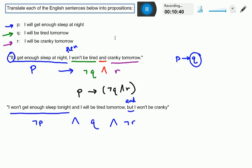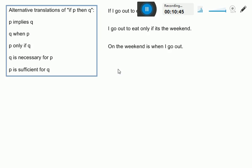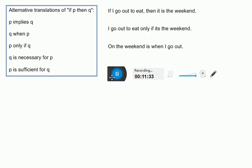One last note, just to keep in mind, it probably won't be a big issue this semester. But in the future, there are actually several different ways in English to say IF P THEN Q. P implies Q is one of the technical ways. But we could also say Q WHEN P. We have P ONLY IF Q. These last two are a little bit more technical. Q is necessary for P. P is sufficient for Q. Those are things that you might see more in an upper-level math course.